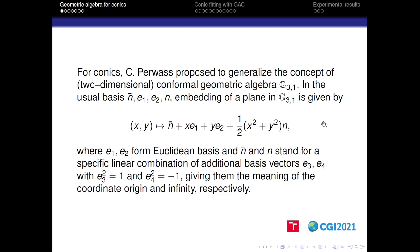In order to describe the geometric algebra for conics we generalize the concept of two-dimensional conformal geometric algebra with signature 3-1 and with usual basis n-bar, e1, e2 and n. Vectors e1 and e2 form the usual Euclidean basis while n-bar stands for the origin and n stands for the infinity.